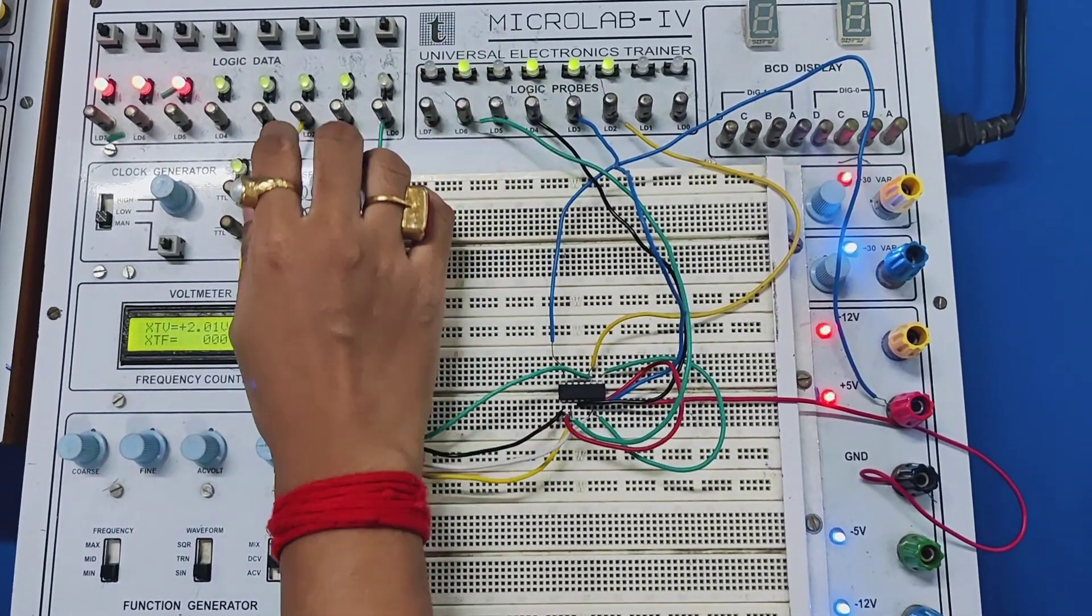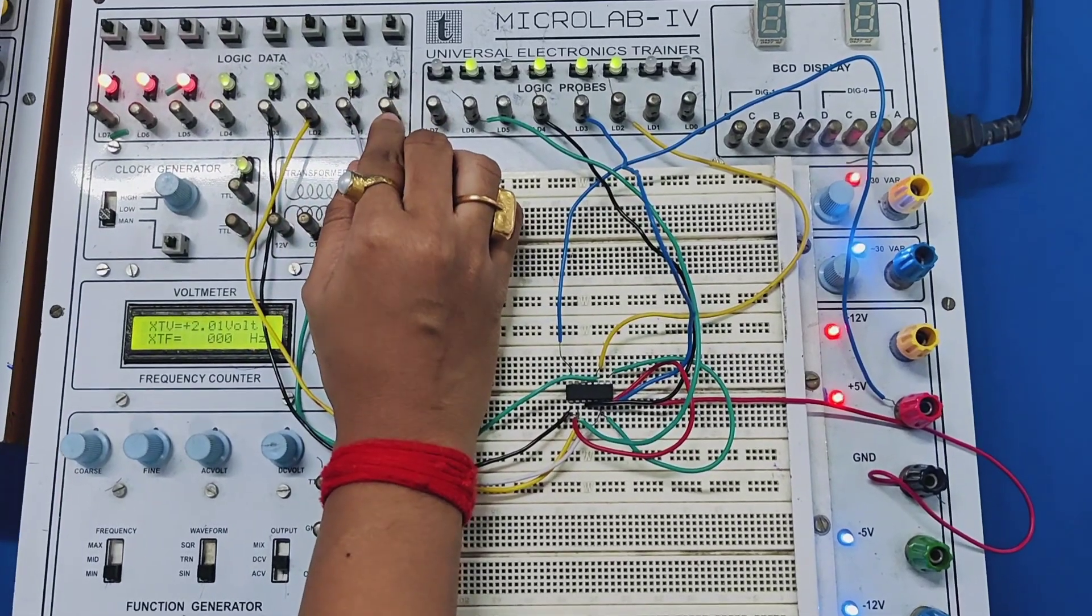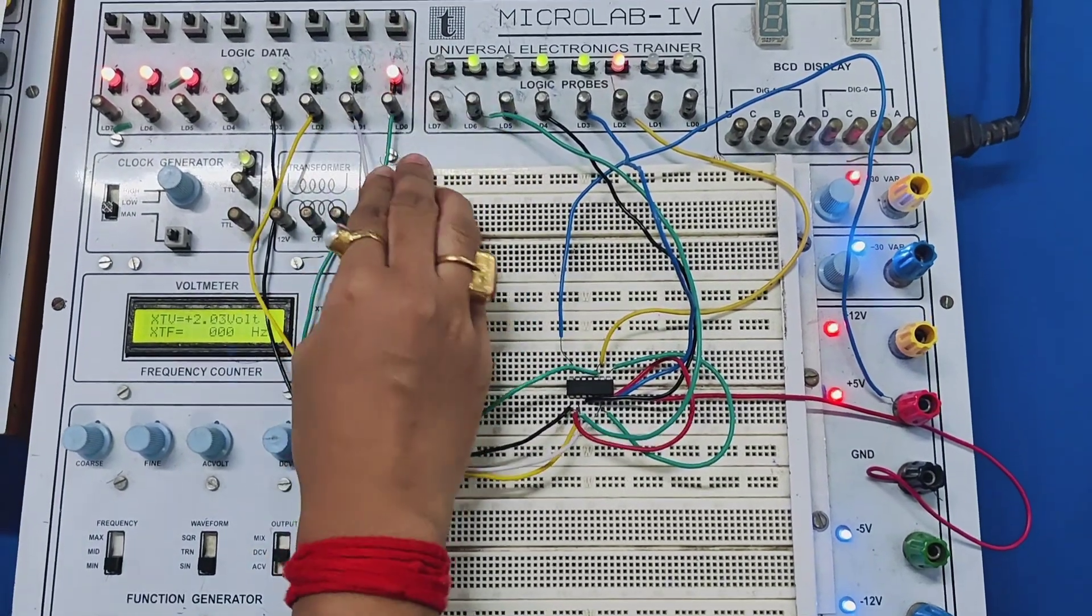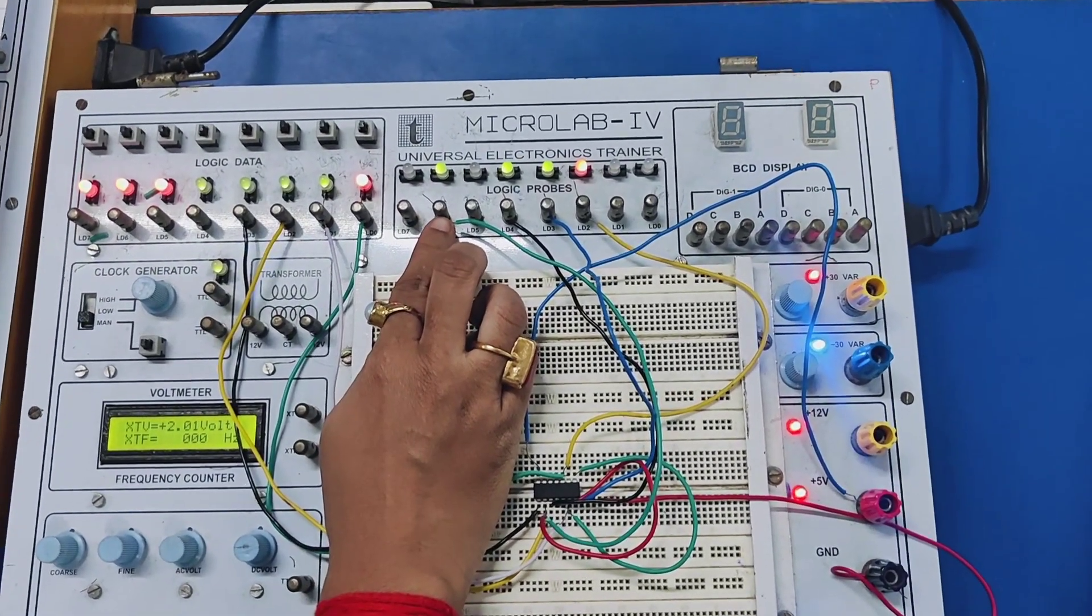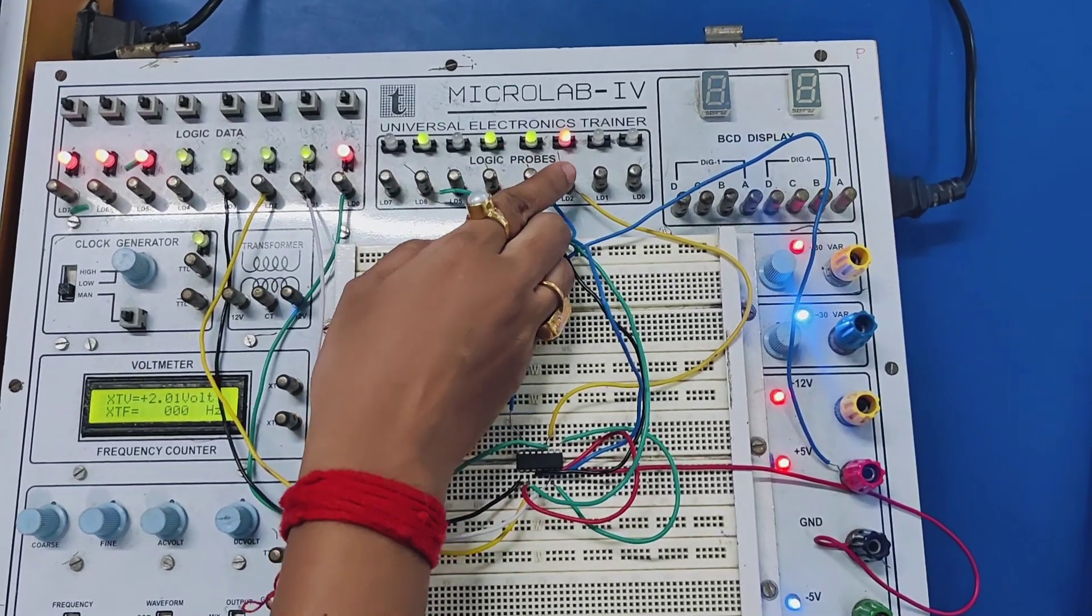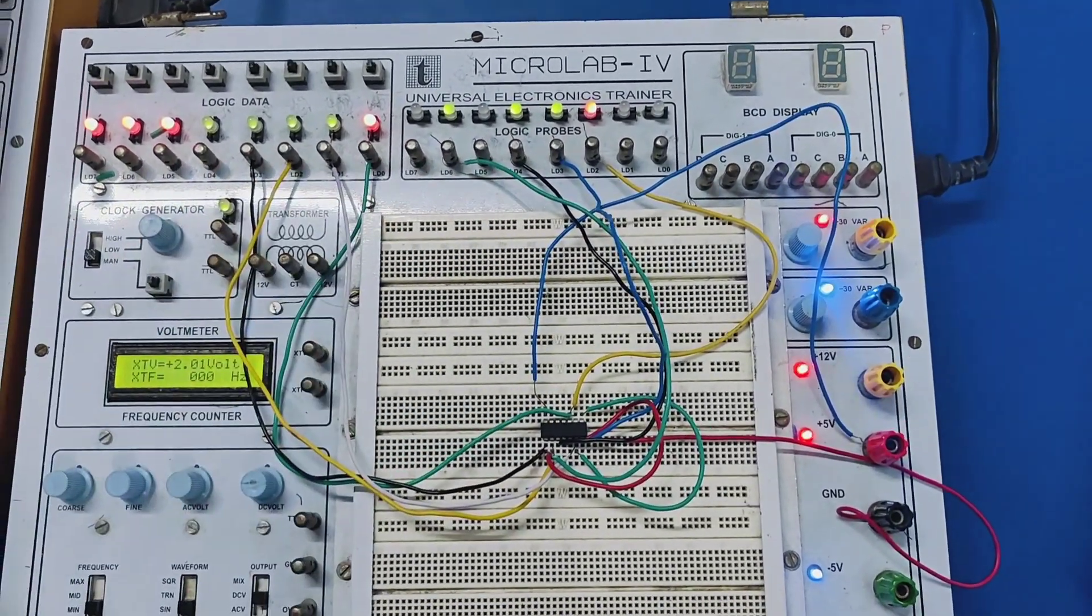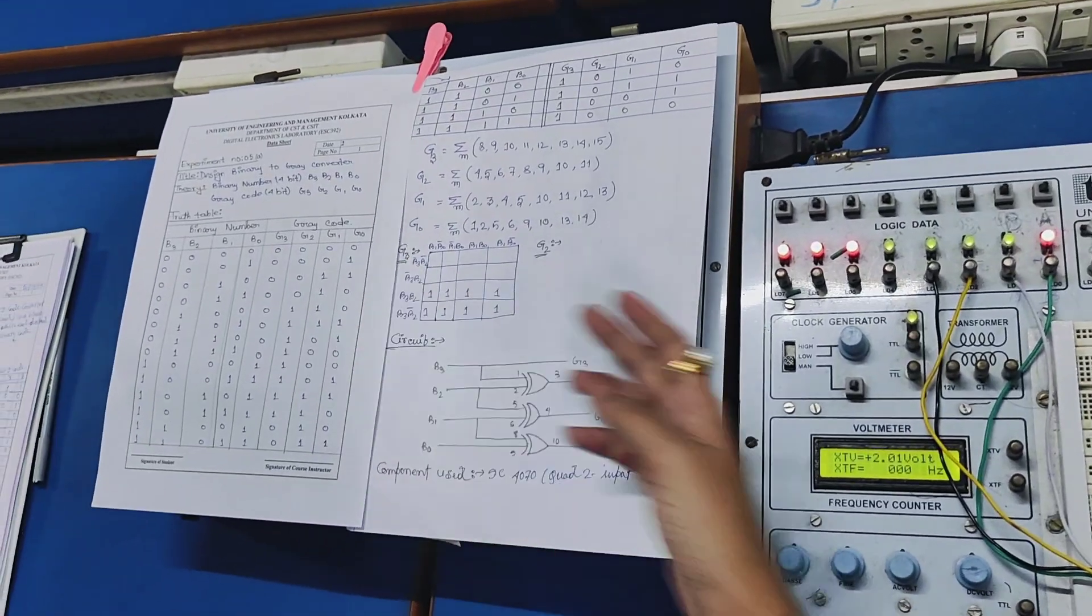Now we are putting the value which is if we put 0001 then we got the output 0001. Now from the truth table we can see this matches.